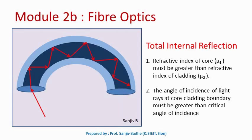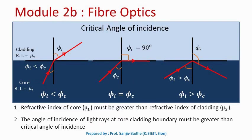Let us try to understand what is the meaning of this critical angle of incidence. For total internal reflection to occur, the refractive index of core must be greater than the refractive index of cladding, and the angle of incidence of light rays at the core-cladding boundary must be greater than the critical angle of incidence.